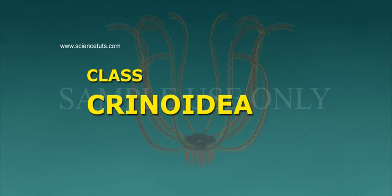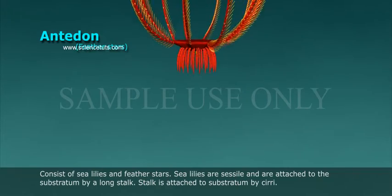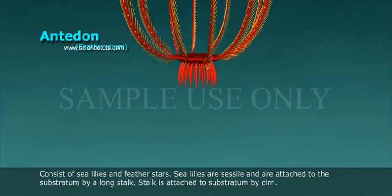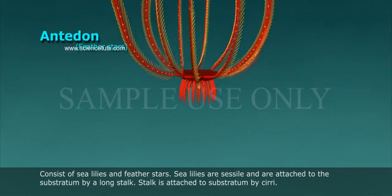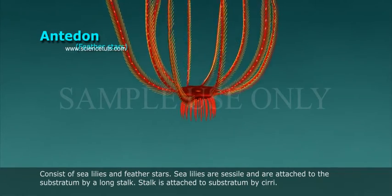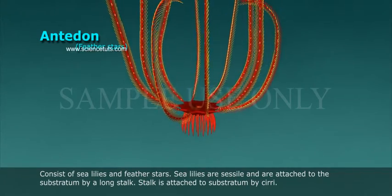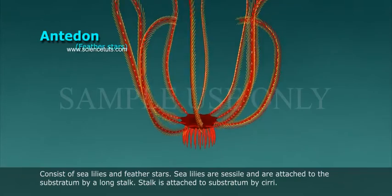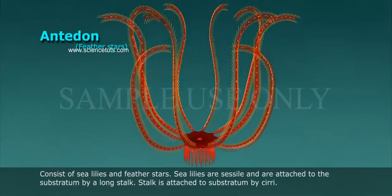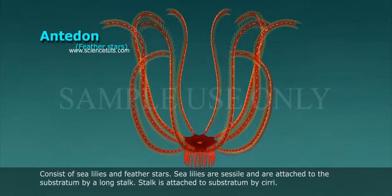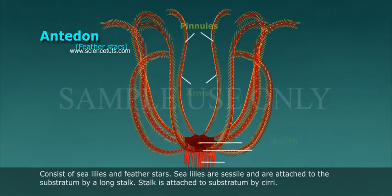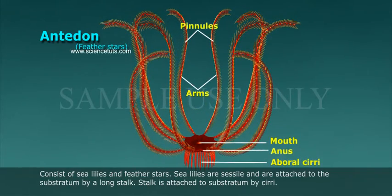Class Crinoidea consists of sea lilies and feather stars. Sea lilies are sessile and are attached to the substratum by a long stalk. The stalk is attached to the substratum by cirri.